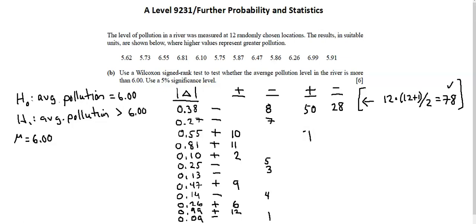So from here, I'll identify my test statistic as the minimum of the two totals that I've calculated, 50 and 28. And that minimum is 28.